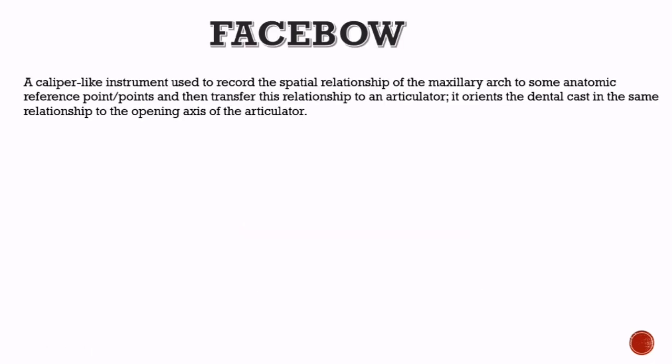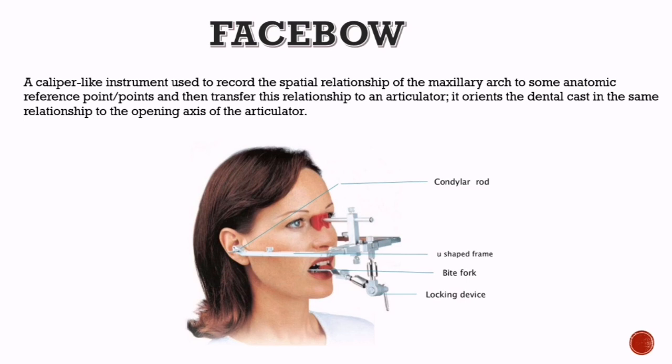Now let's know about face bow in detail. A face bow is a caliper-like instrument used to record the spatial relationship of the maxillary arch to some anatomic reference point or points, and then transfer this relationship to an articulator. It orients the dental cast in the same relationship to the opening axis of the articulator.